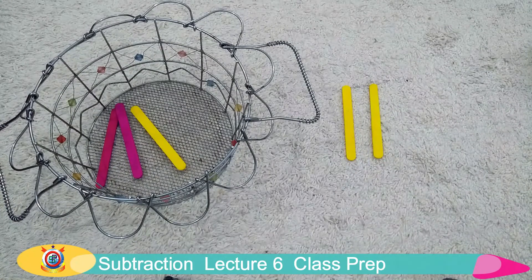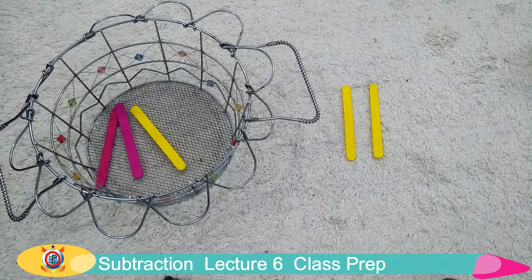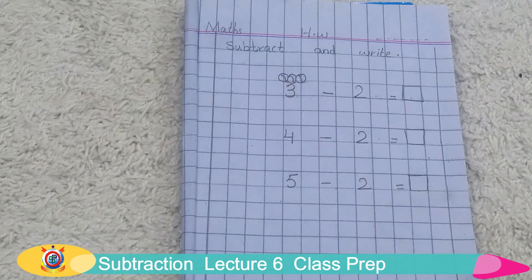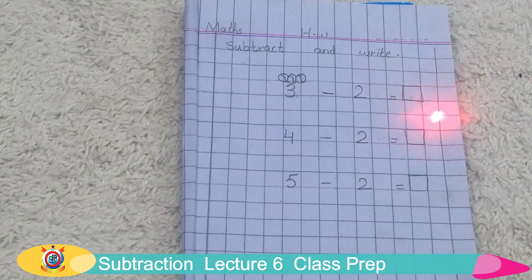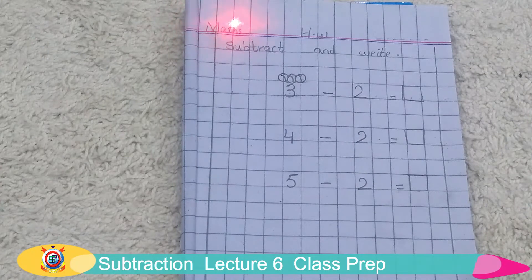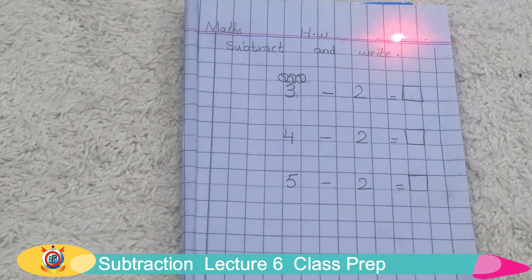Now we will do some homework. I will prepare an activity page for you. You will prepare your homework like this. First, you will draw the margin line on both sides. Then you will write the spelling of maths: M-A-T-H-S. Then you will write homework here. And then you will put the date — ask your mama or papa for the date.